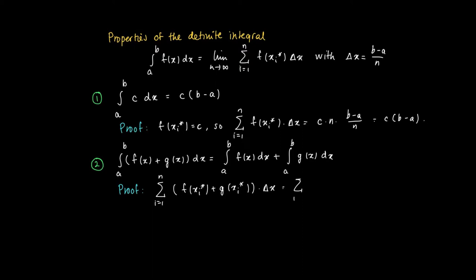The proof is as follows. We form the sums with sample point x_i star, so we get f(x_i star) plus g(x_i star). Now, the thing is that we can take those sums apart. Since we have a finite sum, we can just add up all terms related to f and those related to g. And if we now take a limit, we see that we get the integral from a to b of f(x) dx plus the integral from a to b of g(x) dx.